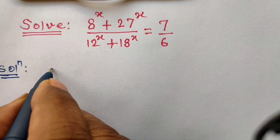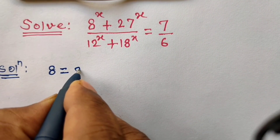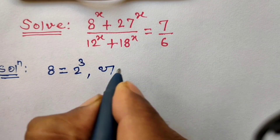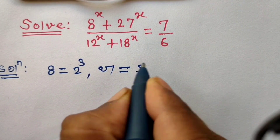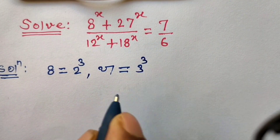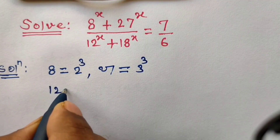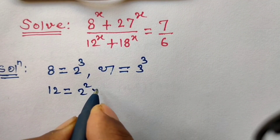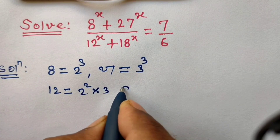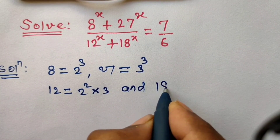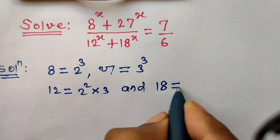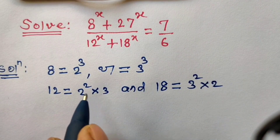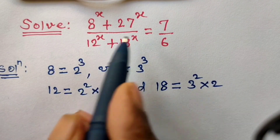First of all, 8 can be written as 2 cubed, 27 can be written as 3 cubed, 12 can be written as 2 squared into 3, and 18 can be written as 3 squared into 2. We will put these values into the equation.